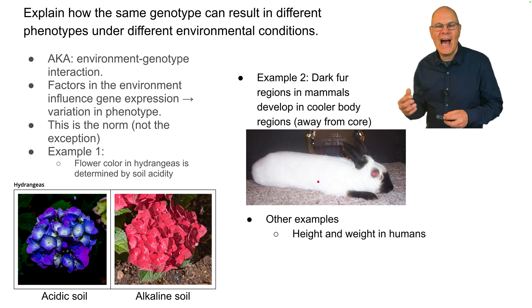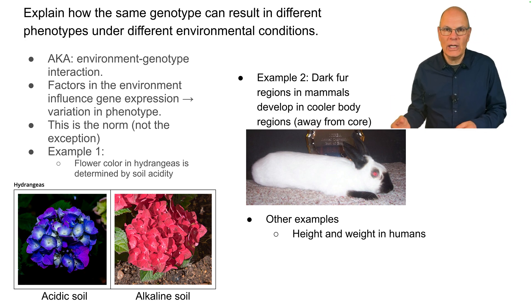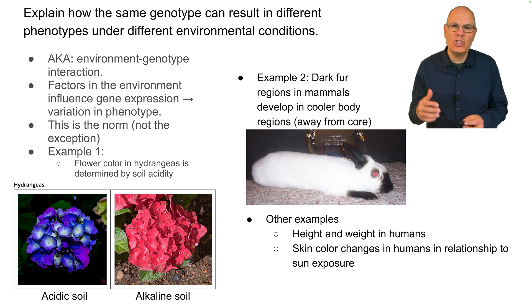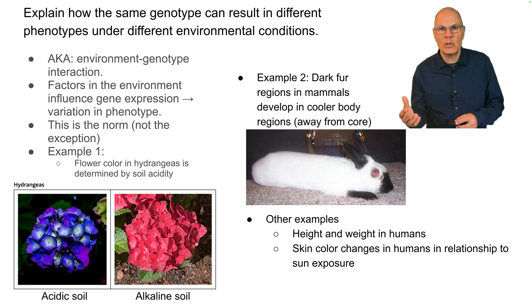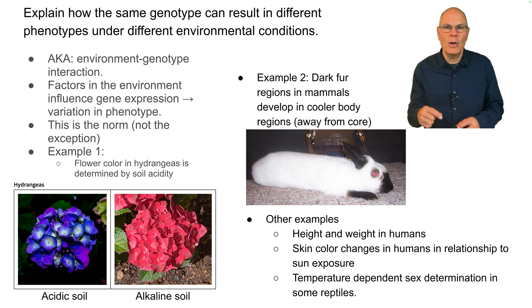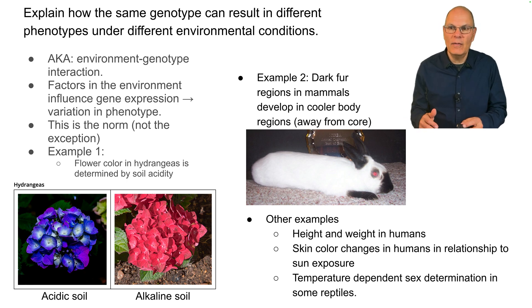There are many other examples. Height and weight in humans is caused by an interaction between the genes someone inherits and the environment they're in. The way your skin color can change in relationship to the amount of sun you're exposed to — that is genes being expressed in relationship to environmental cues. We also talked about how sex is determined by temperature in certain reptiles, another example of environment-genotype interaction.